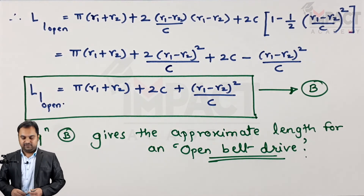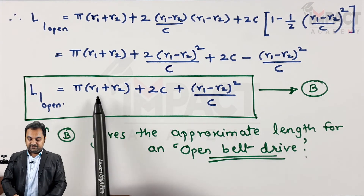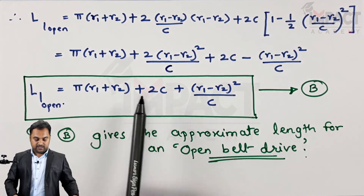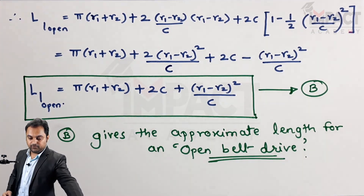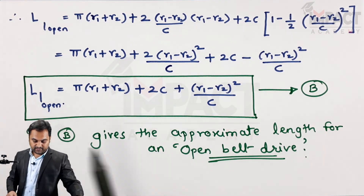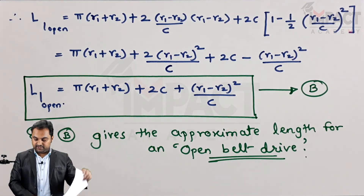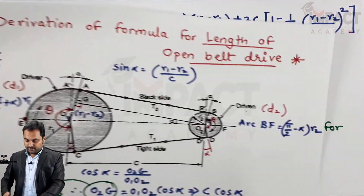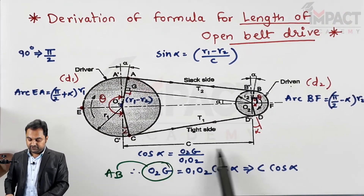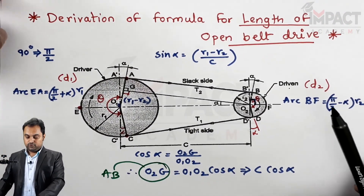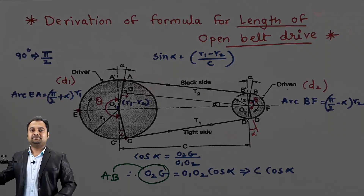When we see this final formula, it is expressed in terms of R1 and R2 — the radii of the larger and smaller pulleys — and C, the center distance between the two pulleys. With this, the derivation of the open belt drive length formula is complete.